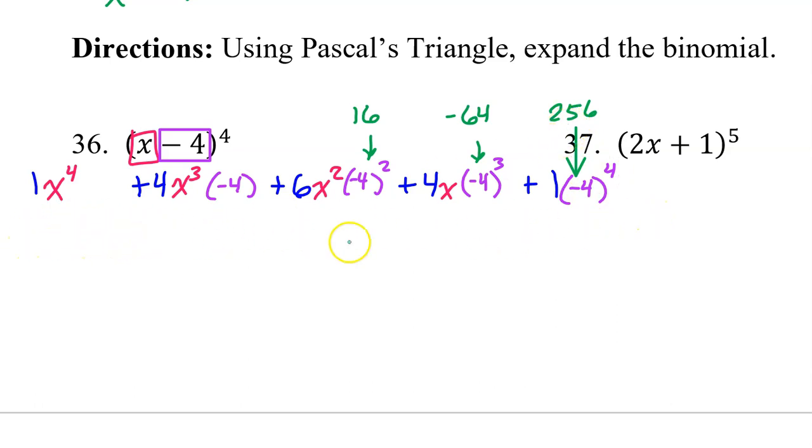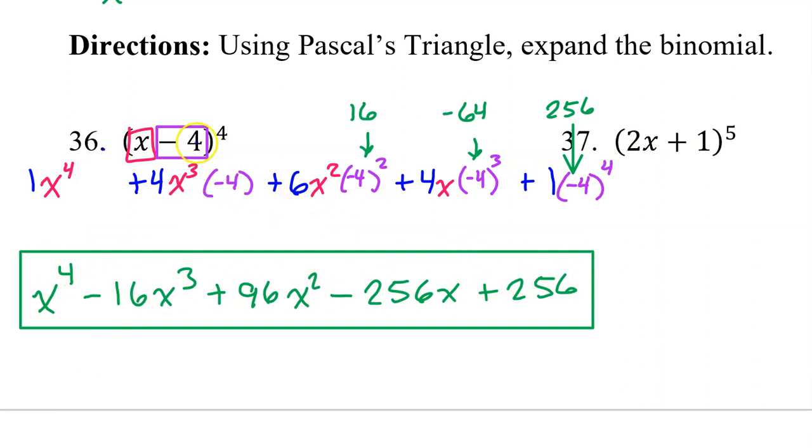So I can almost go ahead and write the final answer now. So we clearly have x to the fourth power. Here I have four times negative four. So that's going to be negative 16 x to the third power. And then here I have 16 times six. So that's plus 96 x squared. This time I will have negative something, whatever four times 64 is. So 256 x, and then plus 256. Notice that when you have a minus inside of here, the sign of the terms will alternate. Positive, negative, positive, negative, positive. So this is what you get when you expand the binomial for number 36.